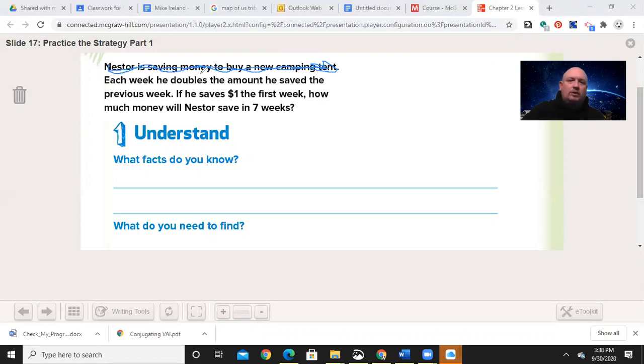I'm going to cross that out. It's not important. But what is important? Doubles the amount he saved the previous week. So we know we're going to be multiplying by 2. Saves $1 the first week, and then we want to know what he's going to save in seven weeks.